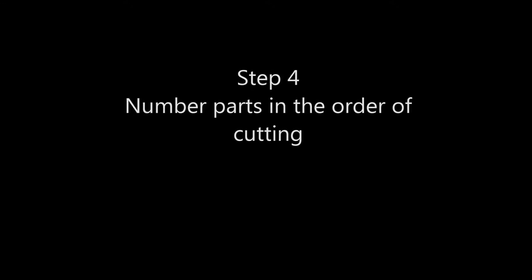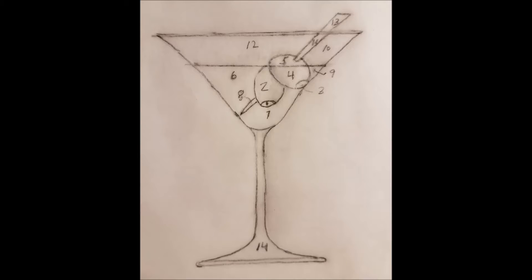Step 4, we're going to number the parts in the order of the cutting. So we have a drawing here of the martini glass, and you can see I've found there's 14 parts. Basically two rules when I decide on the order. Number 1, never cut out a part that contains other parts. And number 2, try to cut in an order that you don't have to create a starter hole for each part. You want to be able to just continue from one part to the next. There's a lot of different ways this could be done, and you can see what I've done here.